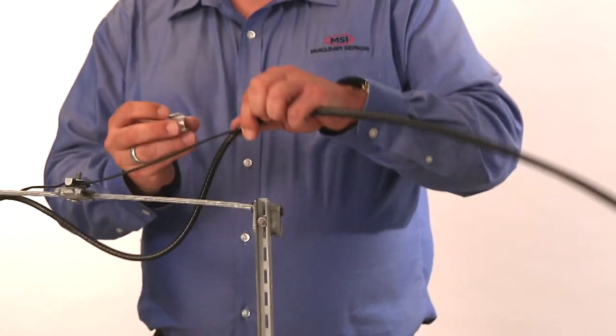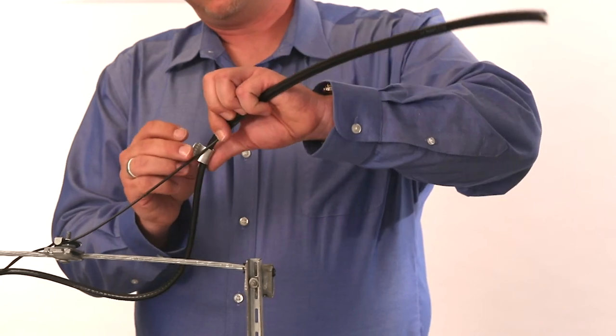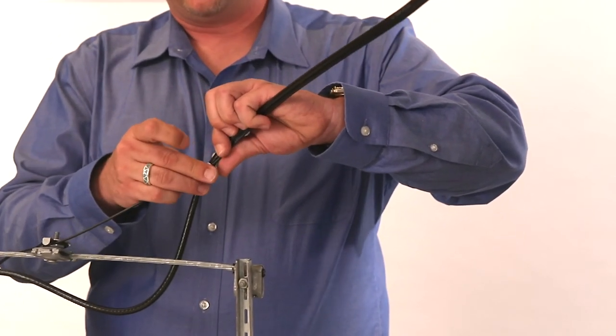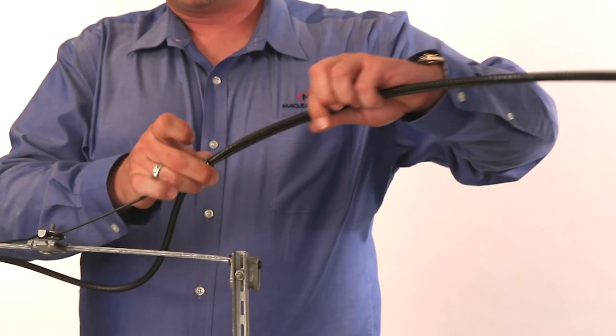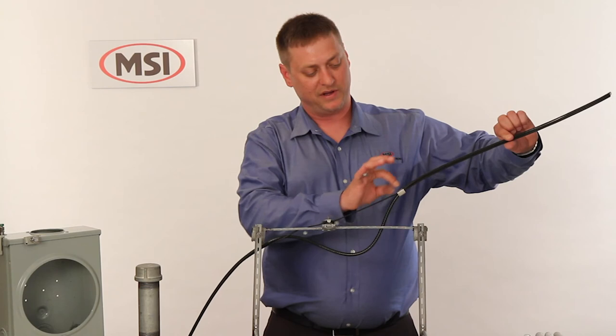To install, take the clip and put it over the cable, then over the messenger. Using only your fingers, tighten it down. Now you'll see you cannot get any separation of the messenger from the cable.